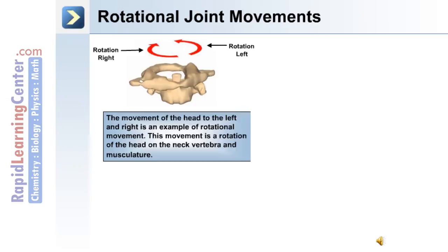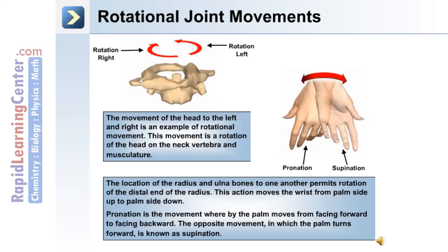Rotational joint movements: the movement of the head to the left and to the right is an example of rotational movement. This movement is a rotation of the head on the neck vertebra and musculature. The location of the radius and ulna bones to one another also permit rotation at the distal end of the radius, moving the wrist from palm side up to palm side down. Pronation is the movement where the palm moves from facing forward to facing backward. The opposite movement, in which the palm turns forward, is known as supination.